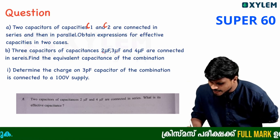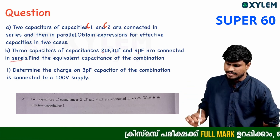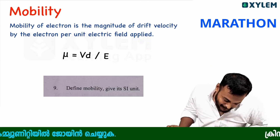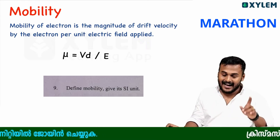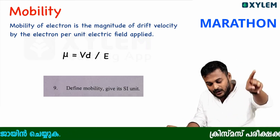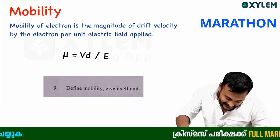2, 3, 4 are connected in series. This is the first thing. Mobility is the drift velocity per electric field.